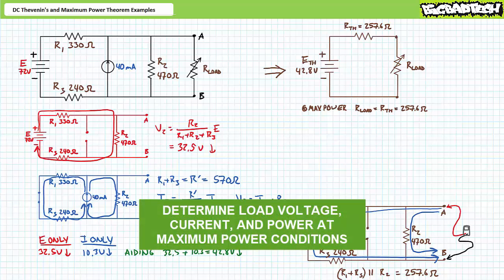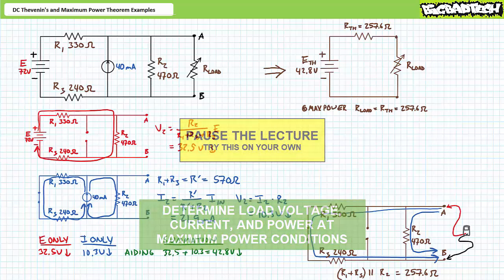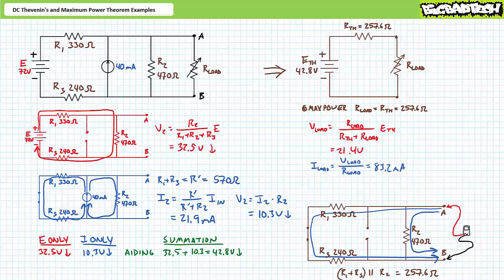Stage two now dictates we determine the load resistance which receives maximum power — solve for voltage, current, and power at maximum power conditions. By all means, pause and try stage two on your own. If you're tracking, you should obtain the following results. The DC Maximum Power Transfer Theorem states maximum real power is transferred to a load when the load resistor equals the Thevenin's equivalent resistance. Therefore, the variable load resistor sees maximum power at a value of 257.6 ohms. The DC voltage divider rule demonstrates voltage across the load at maximum power conditions is 21.4 volts. Ohm's Law gives current through the load as 83.2 milliamps. The DC power formula gives the load experiences 1.8 watts. Any change in load resistance, less or greater, should result in less real power delivery.